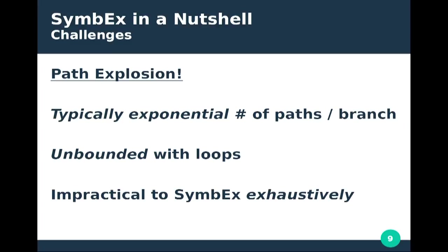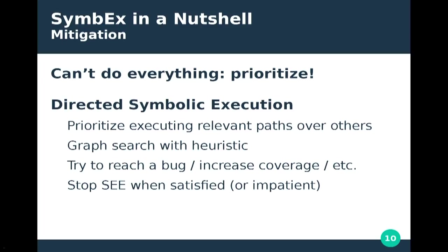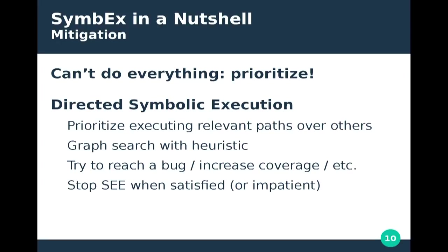When you have too much work and not enough time, you prioritize — this is known as directed symbolic execution. You prioritize executing some paths over others based on a heuristic, reducing the problem to a form of graph search. We use a heuristic to lean symbolic execution towards finding more relevant paths — most commonly, finding bugs or increasing coverage when generating a test suite. The analysis does not terminate, so you let it run indefinitely and it produces results over time. When you're satisfied or run out of patience, you press Ctrl-C and have a set of results produced so far.